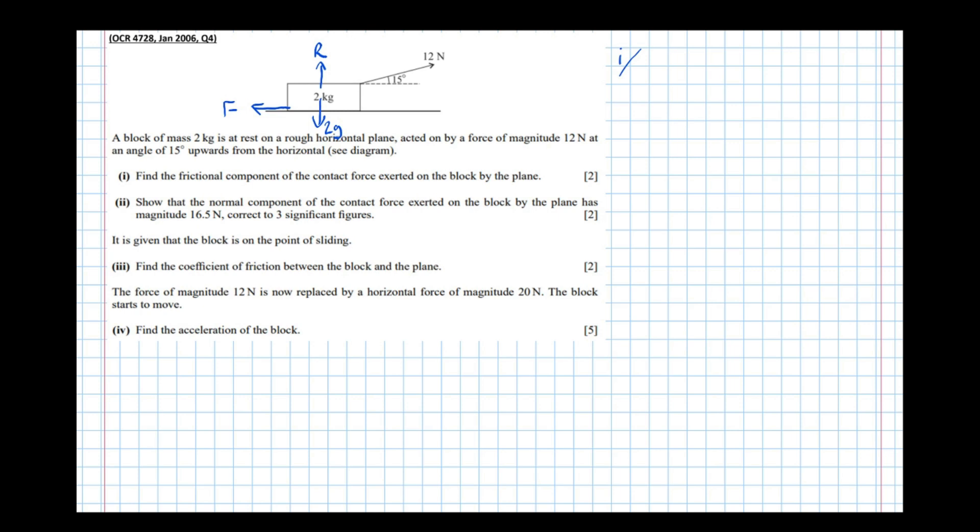So find the frictional component of the contact force exerted on the block by the plane. Well we'll consider right to be the positive direction. We get 12 Newtons which is the force that's pulling the block. And we want the horizontal or adjacent component of that. Well adjacent from SOHCAHTOA is cos 15. Take the friction equals 0. The reason it's 0 is because it's at rest. So F equals mass times acceleration and because it's at rest the acceleration is 0.